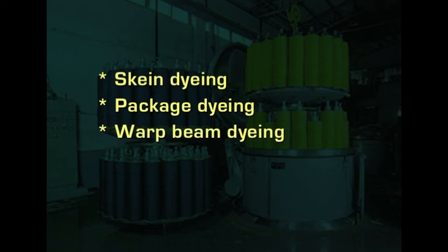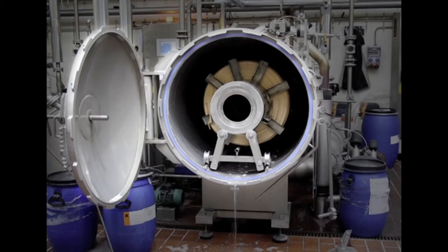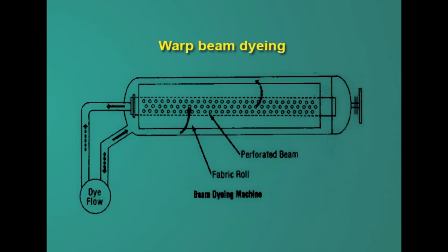The next variety is warp beam dyeing, used when the entire warp is to be in one color. Instead of skein or package dyeing, large perforated warp beams are used onto which the warp yarn is directly wound, and the beam itself is placed into the dye bath. The cylindrical beam is hollow in the center and the dye circulates in and out through the yarn. This is the most economical method because there is no need to rewind, as the yarn is already on the warp beam.